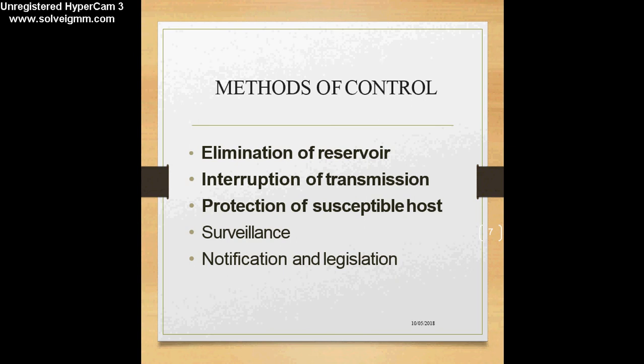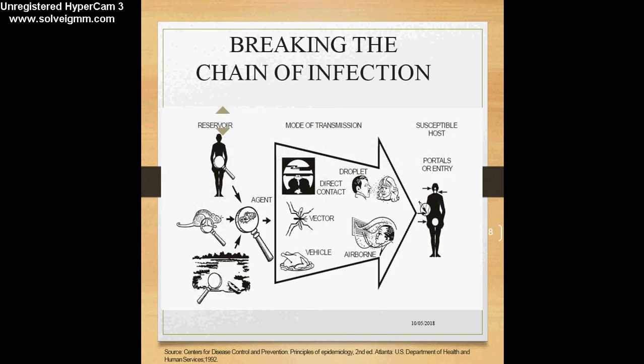Of these five, the first three — elimination of reservoir, interruption of transmission, and protection of the susceptible host — are linked to the chain of infection. If we want to achieve these methods of control, we are essentially breaking the chain of infection. The chain of infection includes the reservoir, the agent, mode of transmission, and susceptible host.